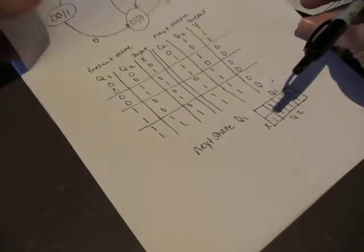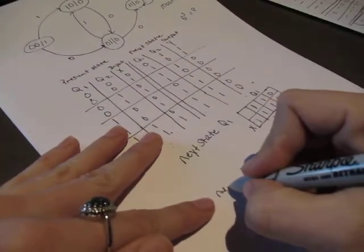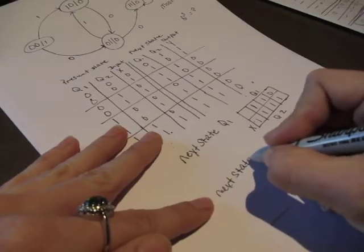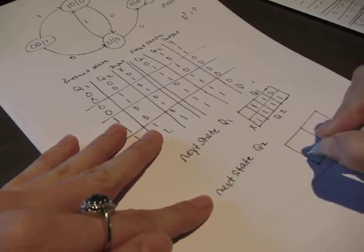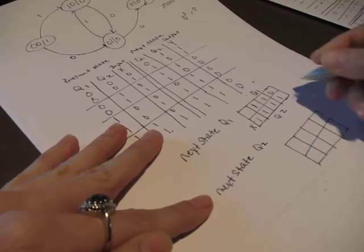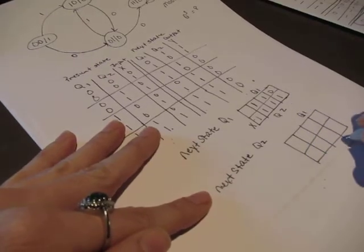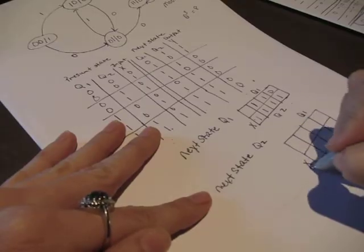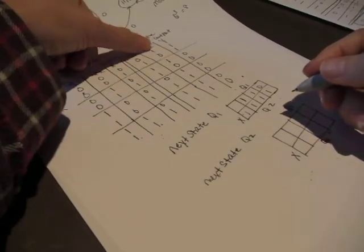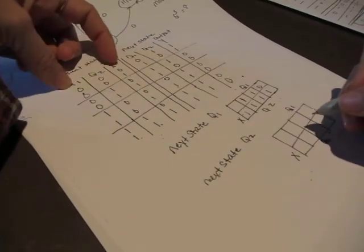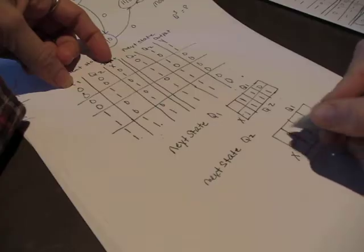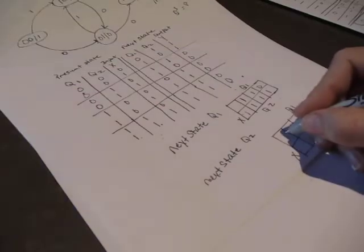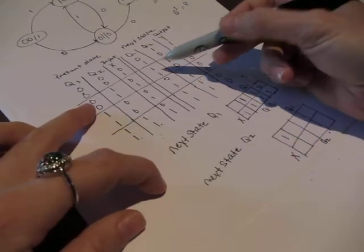Now we need to do our K-map for Q2. Next state Q2 is a function of present state Q1, present state Q2, and X. The first 1 entry is not in Q1, not in Q2, and not in X, so it goes here. I'll go ahead and fill in the rest of these.